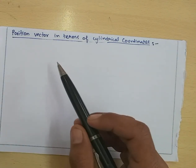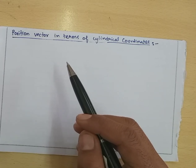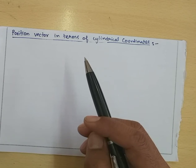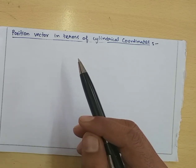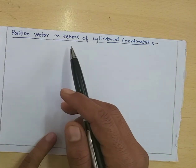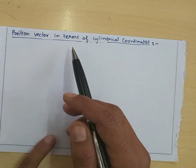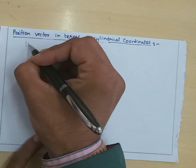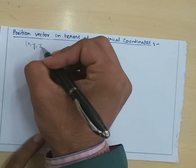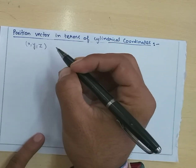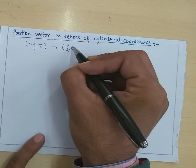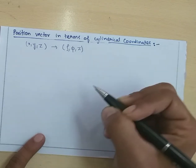In the previous video we discussed how to find the relation between Cartesian coordinates and cylindrical coordinates. Now we will write the position vector in cylindrical coordinates. The cylindrical coordinates are Rho, Phi, and Z.